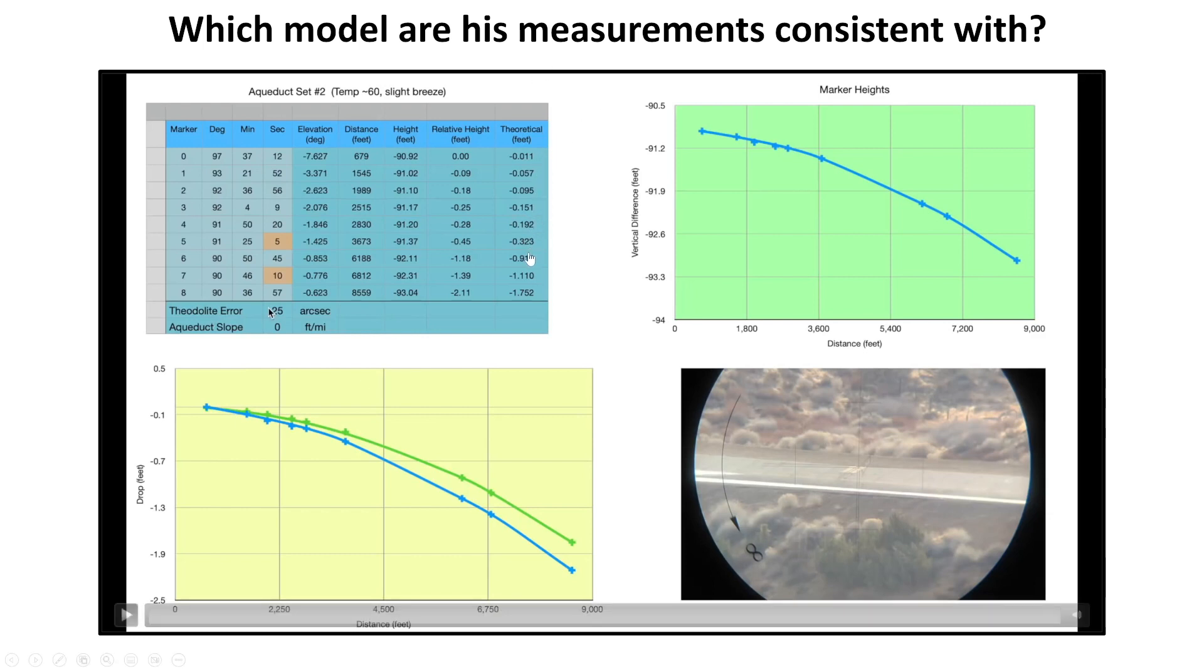The column on the far right, however, is the theoretical drop of eight inches per mile squared. So for example, marker number eight, is 8,559 feet away, which is 1.62 miles, square it, times it by eight inches, and you get 1.752 feet. Easy peasy.